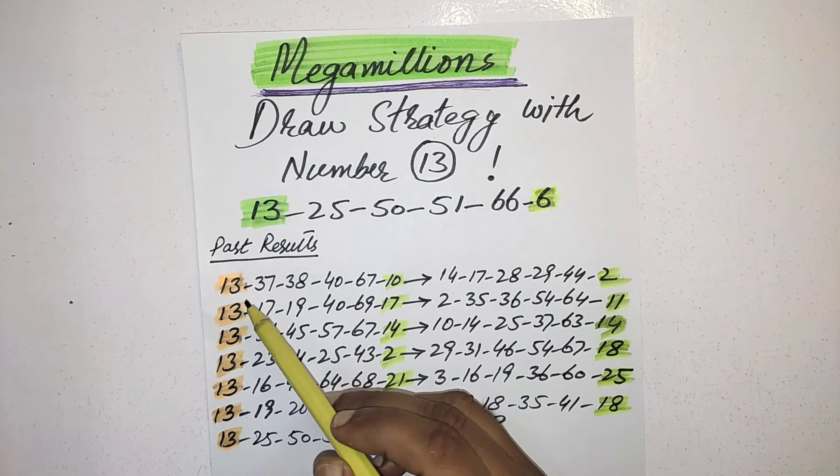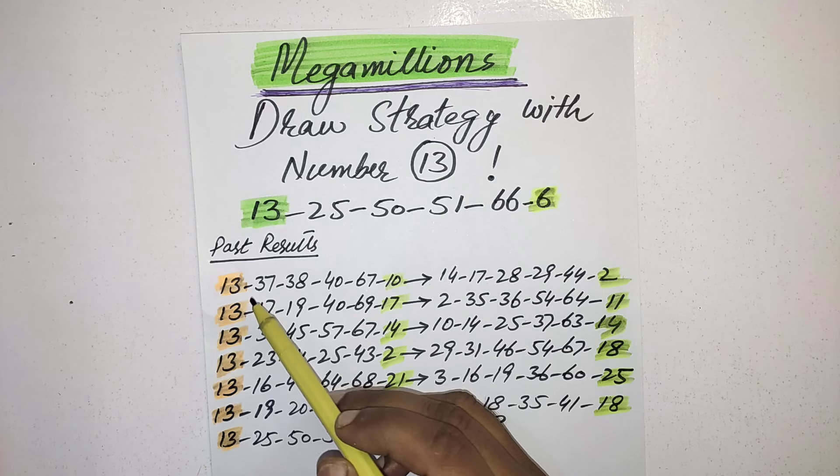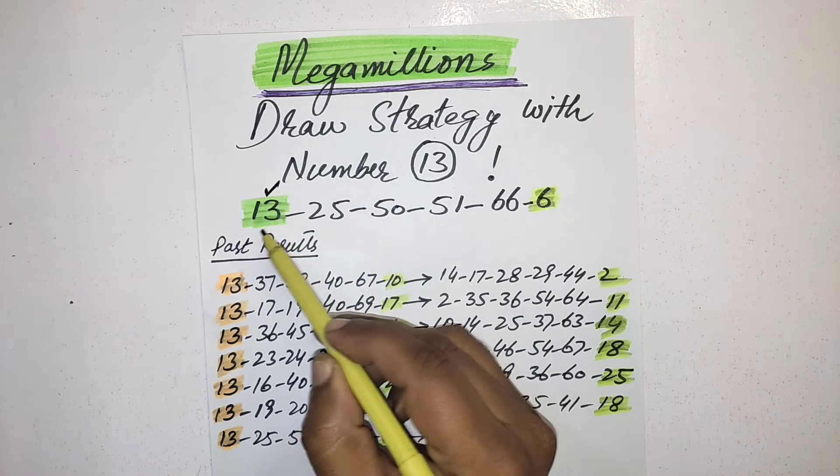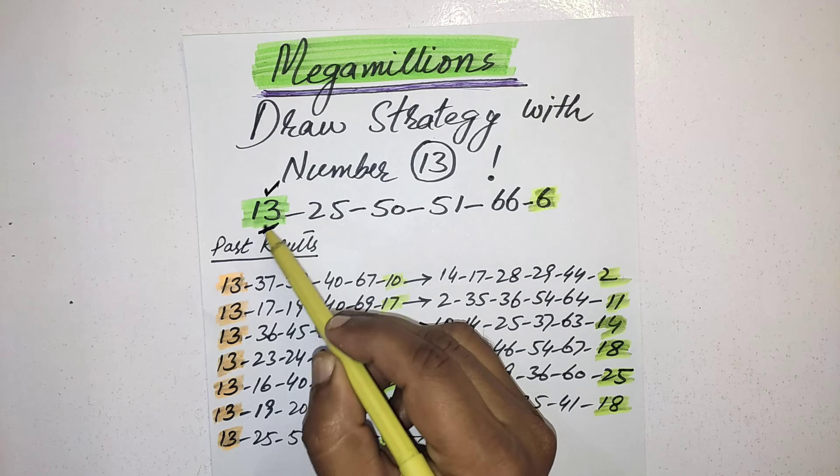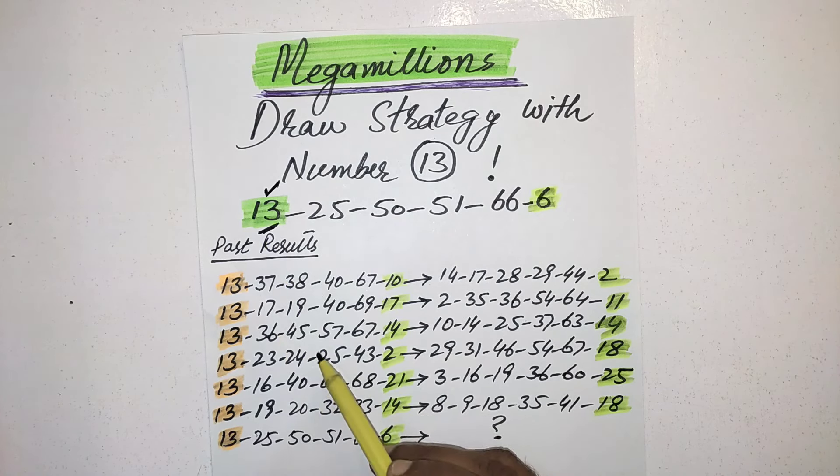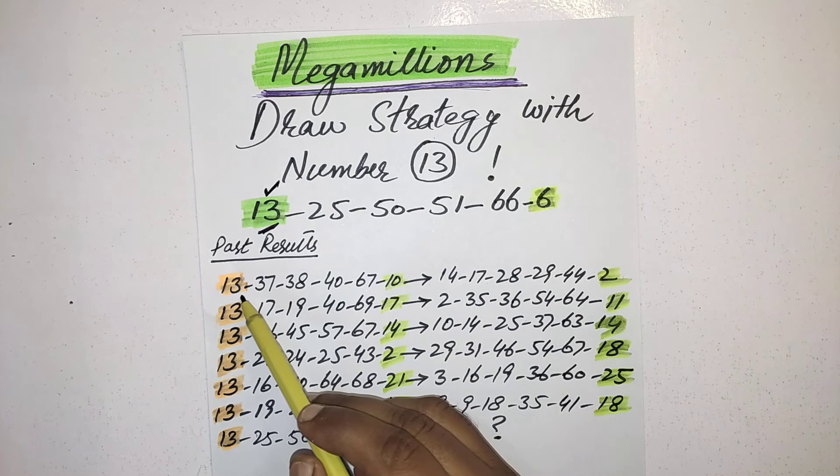Like you can see in the previous result, the 13 number has come as the first number in the result. Every result with this number first number.